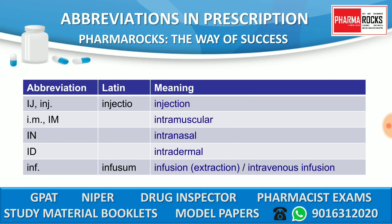INJ means 'injectio,' meaning injection. IM means intramuscular. IN means intranasal. ID means intradermal. IFN means 'infusum,' meaning infusion — mainly given as an intravenous infusion.